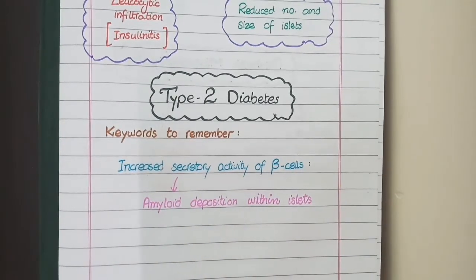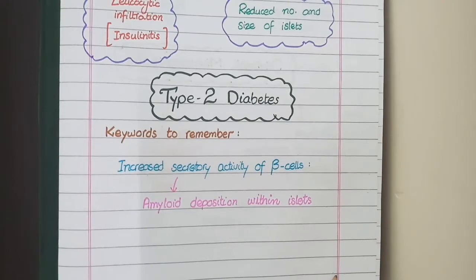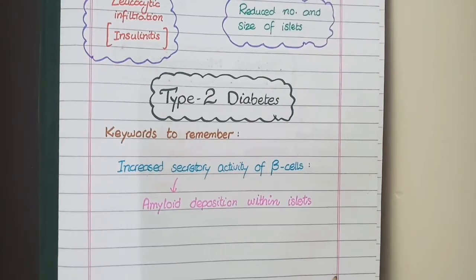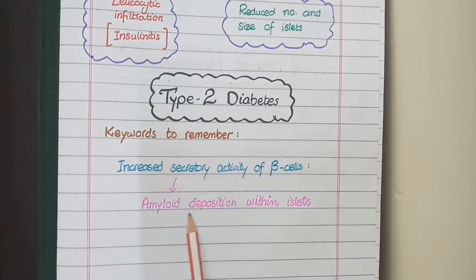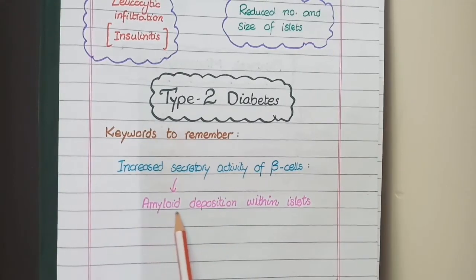In Type 2 diabetes there is insulin resistance, so to counter this, beta cells have to produce a lot of insulin. Gradually, some beta cells become exhausted from producing so much insulin, and the burden on the remaining beta cells increases further. This increased secretory activity results in the deposition of amyloid material within the islets.